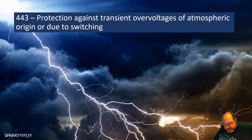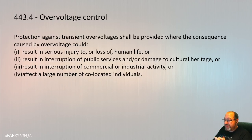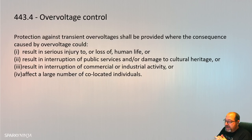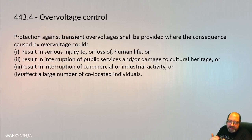Section 443.4 — overvoltage control. Protection against transient overvoltages shall be provided where the consequences could result in serious injury or loss of human life, interruption of public services or damage to cultural heritage, interruption of commercial or industrial activity, or affect a large number of co-located individuals. With regards to this consideration, you have to ask what the consequence is — if it's a risk to human life or a risk of disruption to business, then there is a need to consider it.